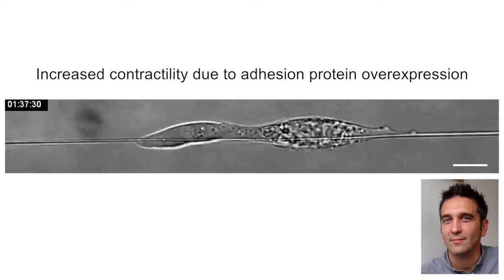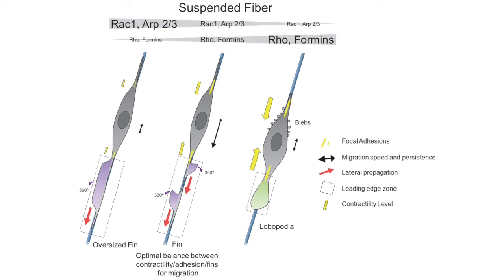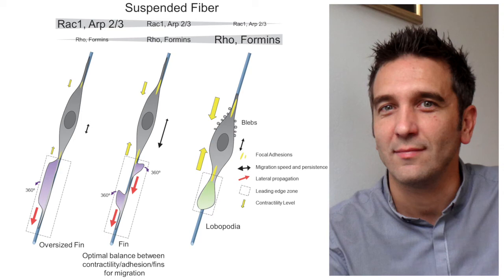Highly contractile lobopodia-forming cells move much less persistently than cells forming fin-like waves. In complex 3D environments in vivo, however, cells may switch between the two types of protrusion depending on their contractility and the balance of ARP2-3 and formin activity. In a low-density environment with sparse fibers, the cell may adopt fin-like protrusions to move fast and scan the environment rapidly.